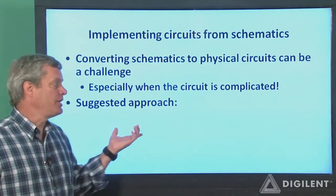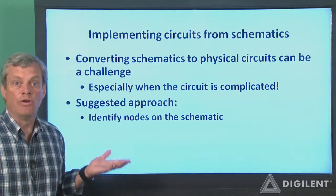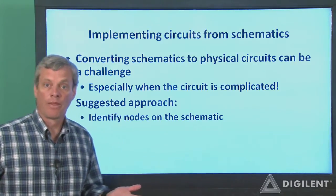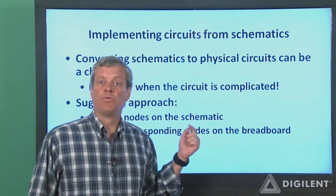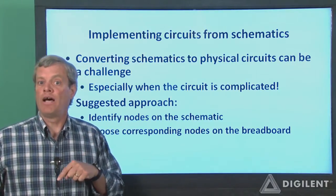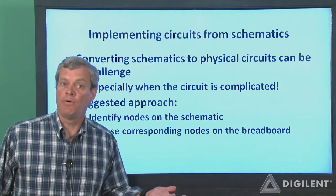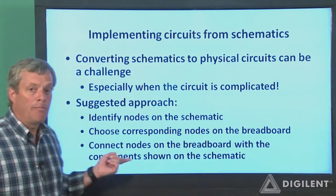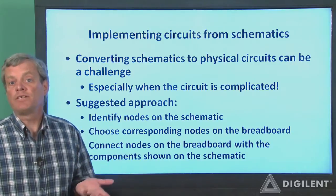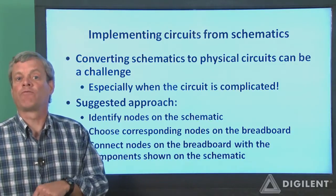Anyway, here's the approach in a nutshell. First, identify the circuit nodes on your schematic. Nodes are just a point at which two or more circuit components are interconnected. Choose nodes on your breadboard which will correspond to the nodes on the schematic. Each row of five holes on the breadboard can be a node, so a breadboard node can connect up to five components. Plug the components indicated on the schematic into their corresponding nodes on the breadboard. This process is probably best explained by doing an example, so I'll work through the circuit from our project.